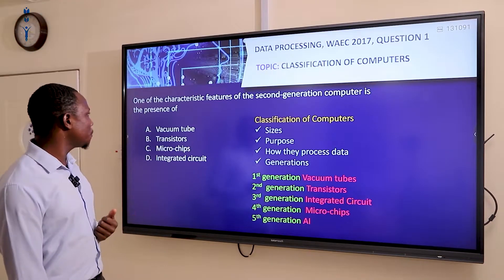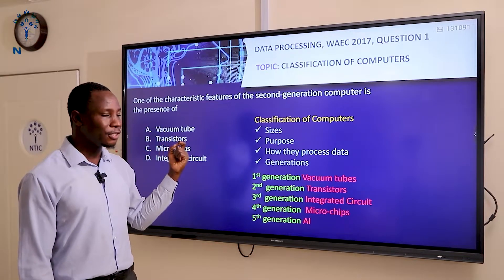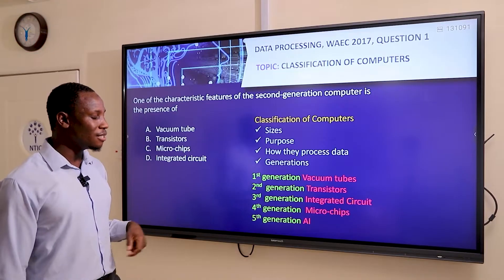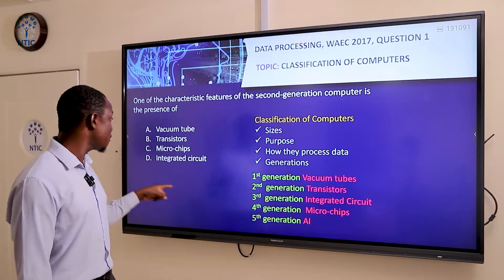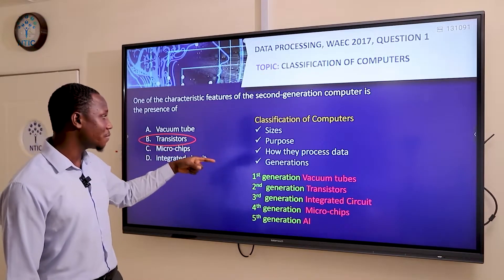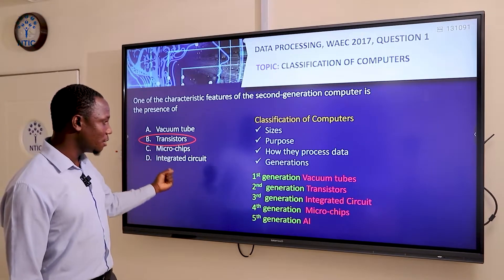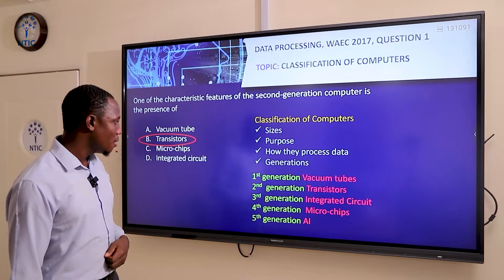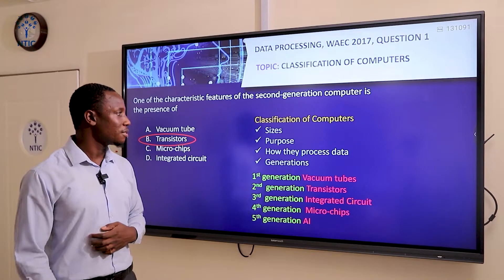Looking at the options, we were asked about the characteristic feature of the second generation of computers. The main characteristic feature of the second generation is the use of transistors. Therefore the answer is transistors, because vacuum tubes are for the first generation, microchips are for the fourth generation, and integrated circuits are for the third generation.